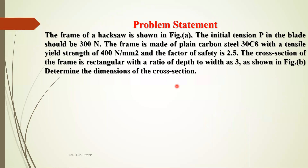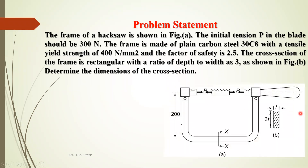Let us start with some numericals. The frame of a hacksaw is shown in the figure. The initial tension in the blade should be 300 Newton. The frame is made up of plain carbon steel 30C8, which is the designation of plain carbon steel with tensile yield strength SYT of 400 Newton per mm square. The factor of safety is 2.5.